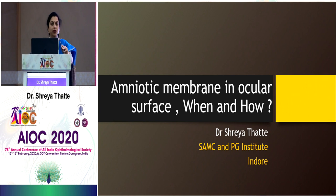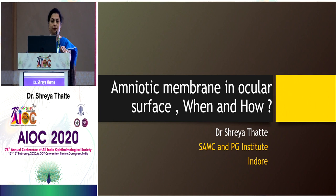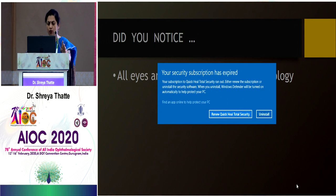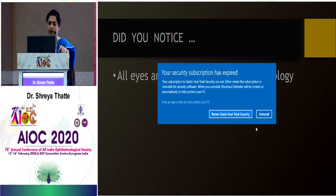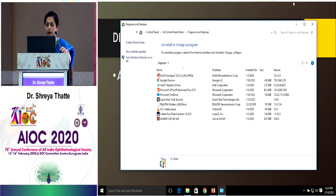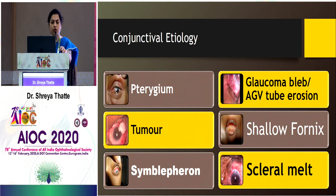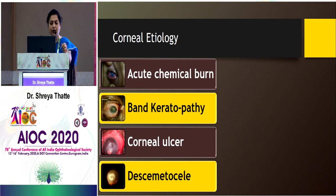I will now talk about amniotic membrane in ocular surface problems — when and how. We encounter different types of ocular surface pathologies of various etiologies. In conjunctival etiology: pterygium, ocular surface tumor, symblepharon, shallow fornix, scleral melt. In corneal pathology: acute chemical burn, band keratopathy, different stages of corneal ulcer, Descemet's membrane exposure, perforation, and total stem cell loss.